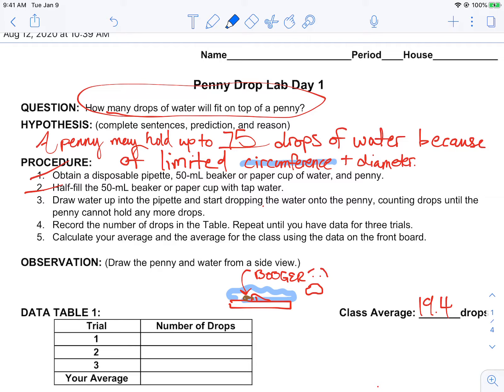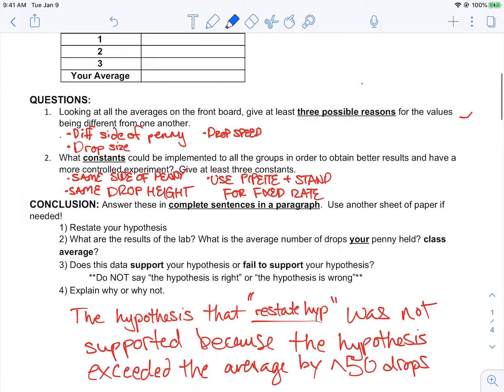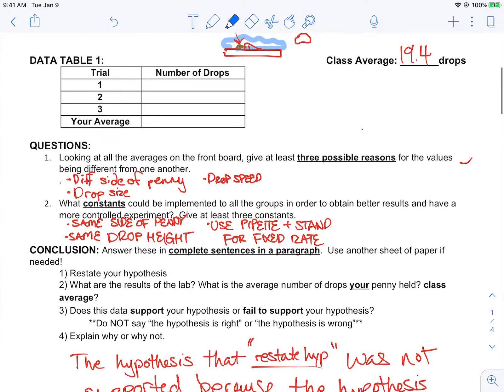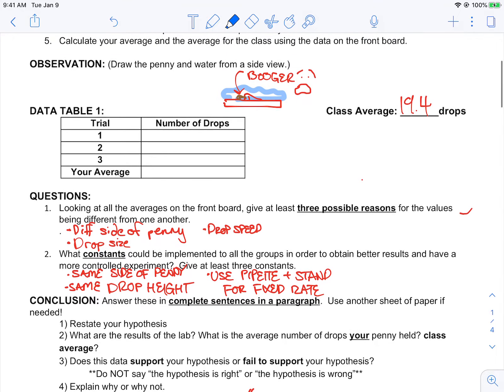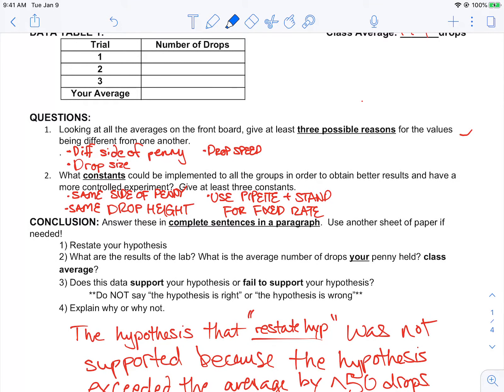So, that said, the deal is that you write a hypothesis without the if-then statement. You just say something basic, to the point, and specific. So, when we move on, we get a bunch of different results. We took a class average. My sample average here is 19.4 drops. And so, then we come up with our possible reasons why some tables and some people got different values.